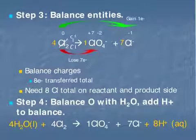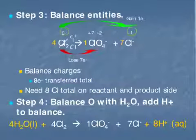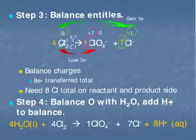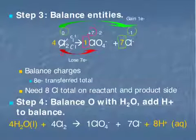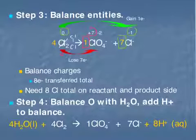The reduction reaction requires gaining 7 electrons total; since each chlorine atom can only gain 1 electron, the coefficient for chloride must be 7. For oxidation, one chlorine atom loses 7 electrons, so the coefficient for perchlorate is 1. On the product side we have 1 + 7 = 8 chlorine atoms, so we need 4 molecules of Cl₂ on the reactant side (each Cl₂ has 2 chlorine atoms, giving 8 total).